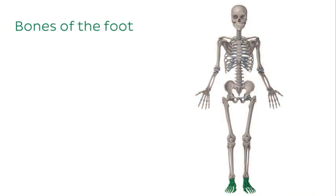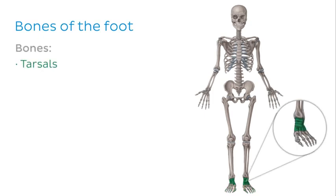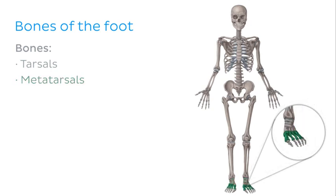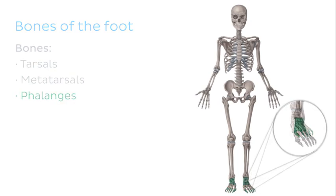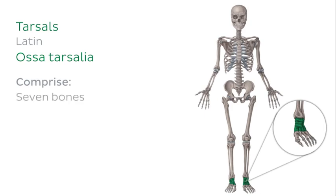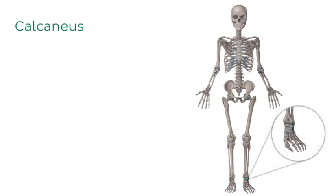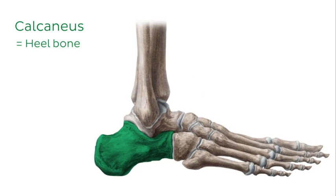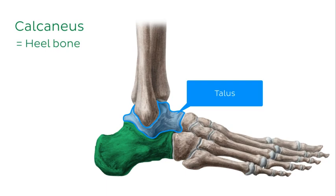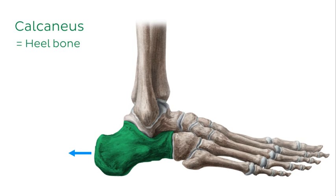Finally, we'll look at the bones of the foot, which can be divided into the tarsals, the metatarsals and the phalanges of the toes. The tarsal bones comprise seven bones. The first is the talus, which forms a link between the foot and the leg via the ankle joint and plays an important role in the stability of the ankle. The second is the calcaneus, also known as the heel bone, which is the largest of the tarsal bones and projects posteriorly to form the heel of your foot.